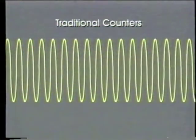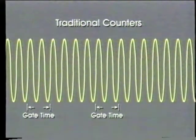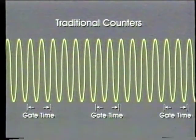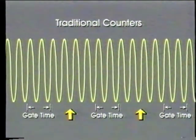Until now, we've used electronic counters to make frequency and time interval measurements. These counters take a frequency measurement over a set gate time, then stop, compute, and display the result. Meanwhile, valuable information about the signal is lost.